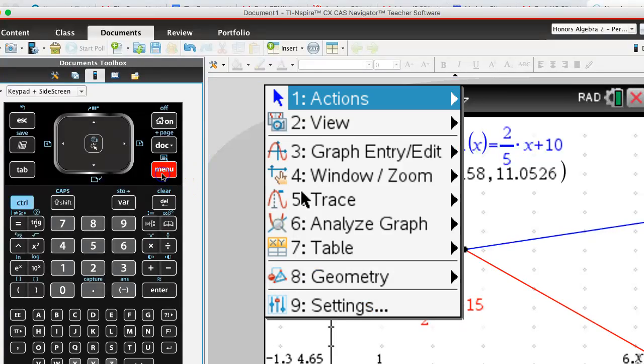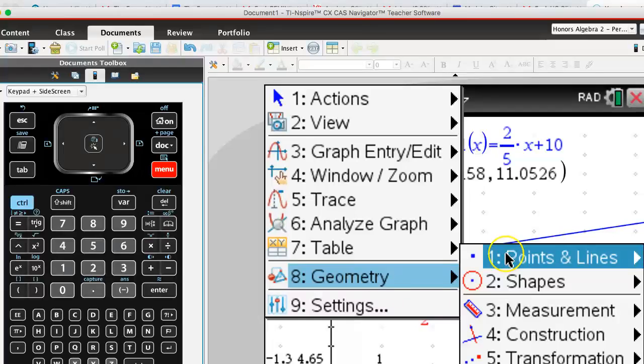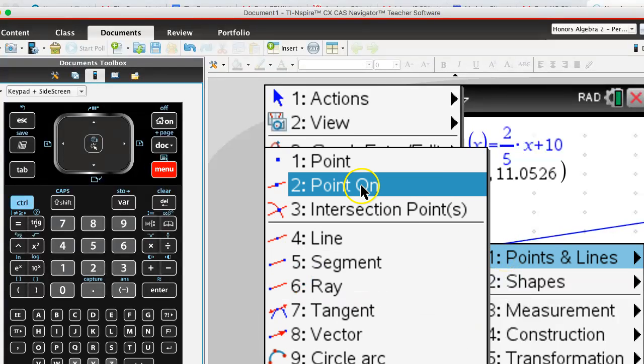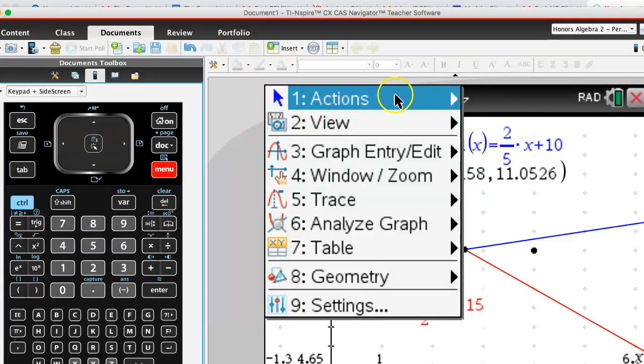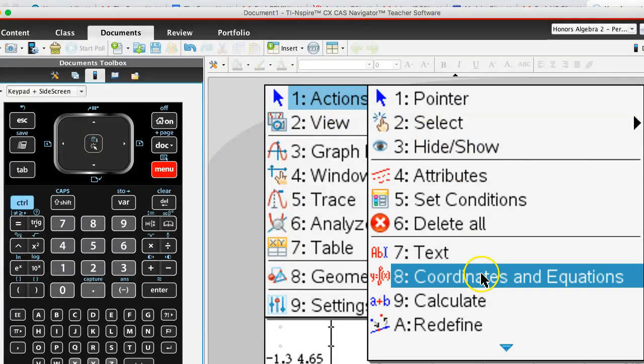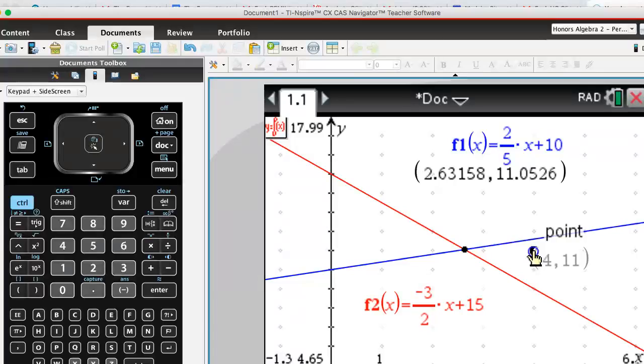We'll try to find the closest integer point. We'll go ahead and put a point on the function. We'll go to geometry, points and lines, point on. I'll put it somewhere on one of these dots in the grid. Now it won't tell me what the coordinate is, so let me go to actions, coordinates and equations, and double-click on this. There we go.